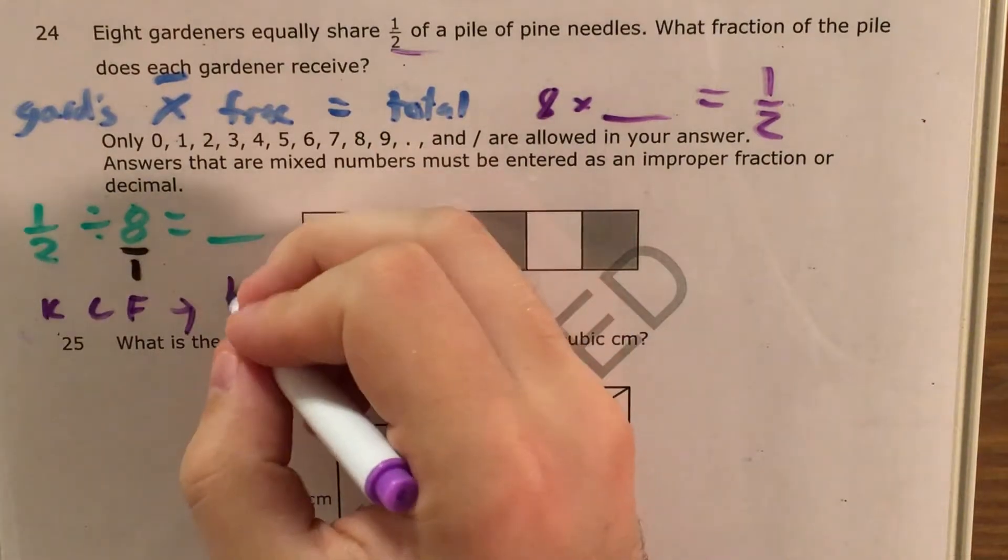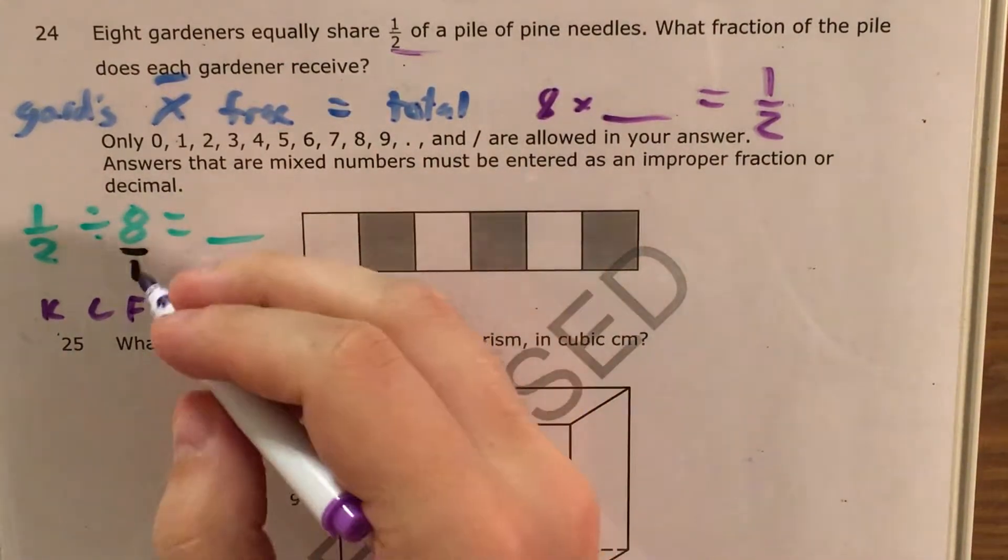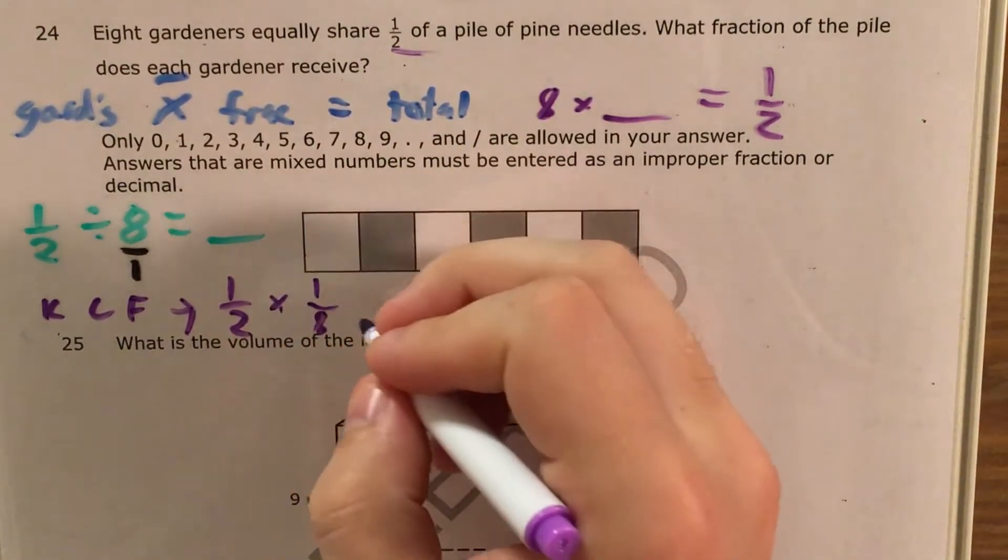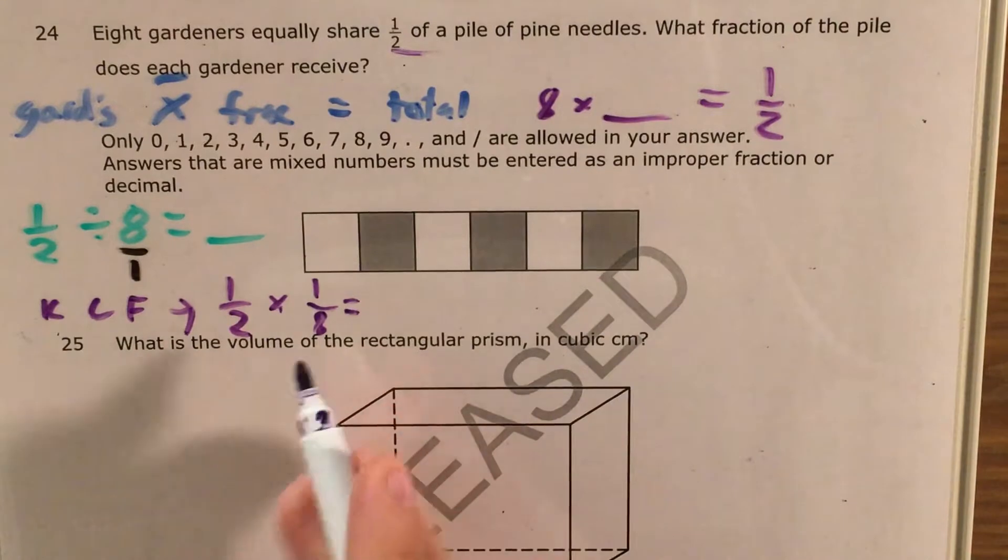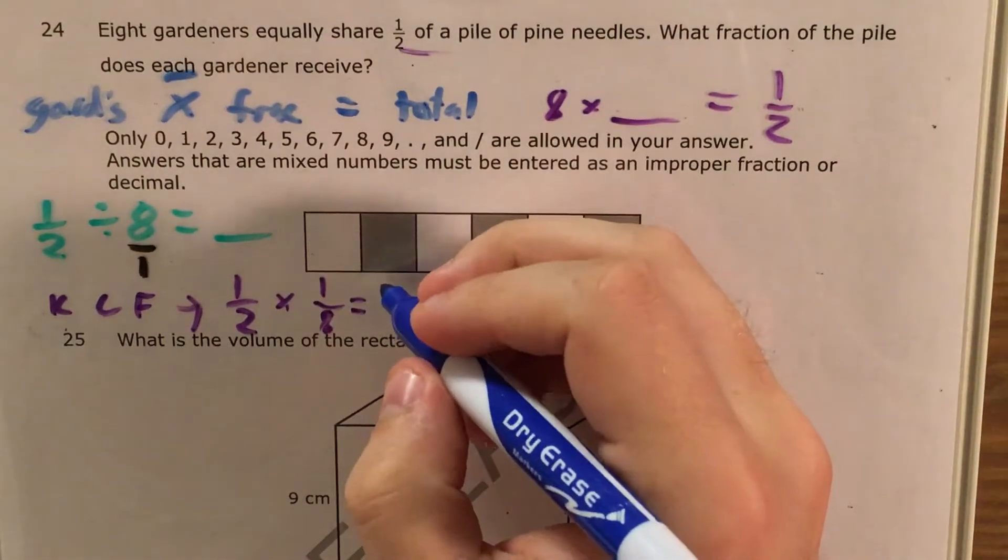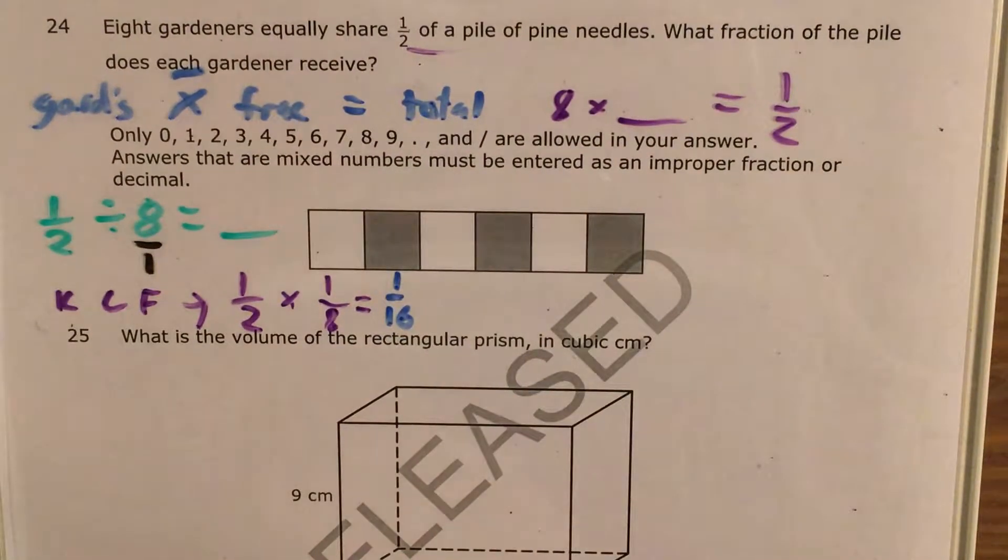So now I keep 1 half, I change dividing to multiplying, and I flip 8 over 1 so it becomes 1 over 8. Now I just multiply across my numerators and denominators. 1 times 1 is 1, and 2 times 8 is 16. So I end up with 1 over 16. Each gardener gets 1 sixteenth of the pile.